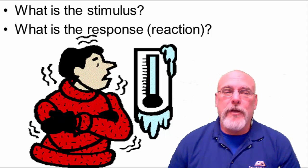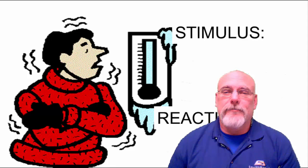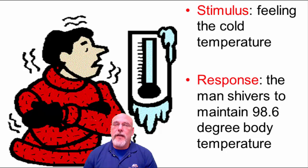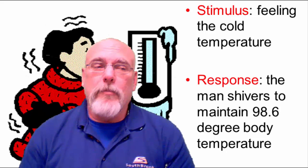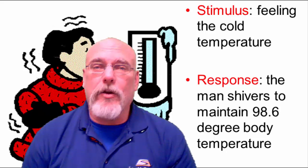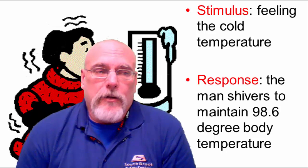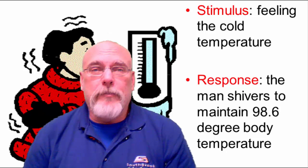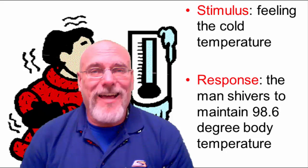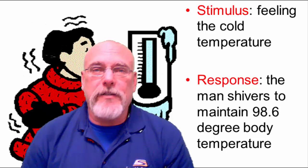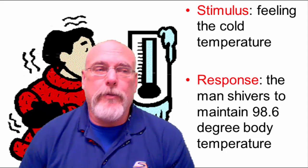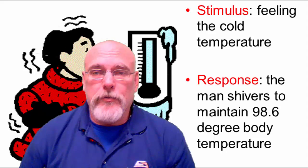Take a look at this picture and think about what the stimulus is. The stimulus is the man feeling the cold temperature, and the response is that the man is going to shiver. He's going to try to maintain a 98.6-degree body temperature. When your muscles contract as you shiver, that actually does produce heat and will warm your body. That's why shivering is a good thing when you're cold. One of the dangerous signs of hypothermia — which means not enough heat, so you're getting too cold — is that you're shivering and then you stop. That's dangerous because your body systems are giving up and can't keep up with the cold.